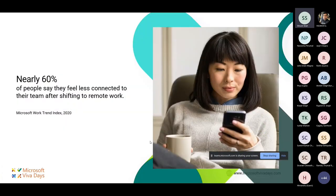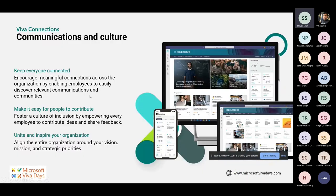Viva Connections is a service that is part of the employee experience platform. Microsoft created it because nearly 60% of people feel less connected to their team after shifting to remote work. Over the last two years of pandemic, people working from home wanted to stay up to date with their organization. With Viva Connections, they can check company news, see assigned tasks, and find important resources all in one portal.